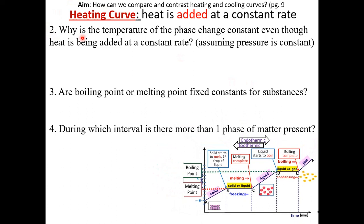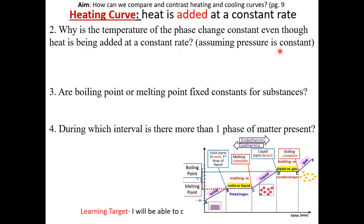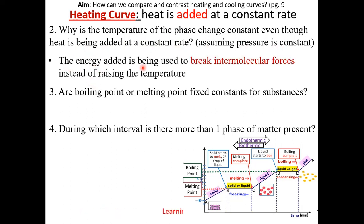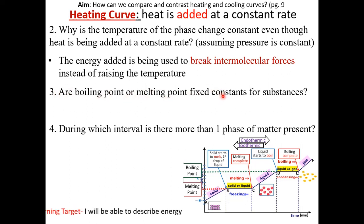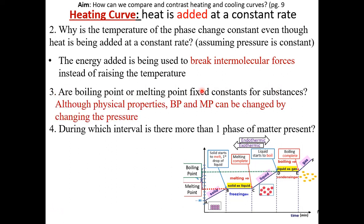Question 2: why is the temperature of the phase change constant even though heat is being added at a constant rate, assuming pressure is constant? The energy added is being used to break the intermolecular forces instead of raising the temperature. Question 3: are boiling point or melting point fixed constants for substances? No, because boiling point and melting point can vary based on pressure. We will discuss why that's the case later on in the unit.